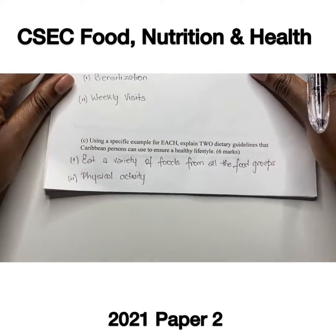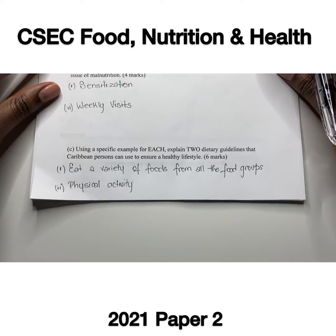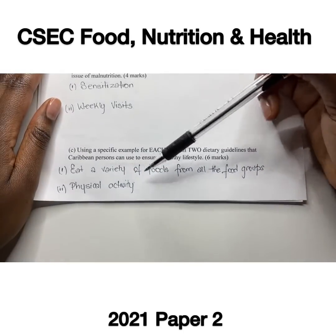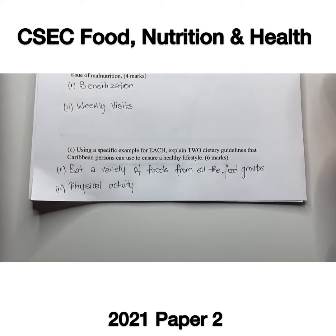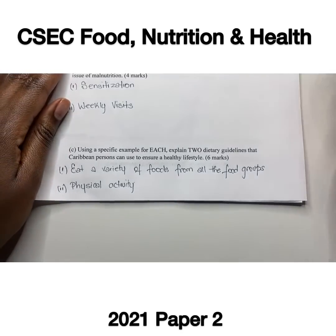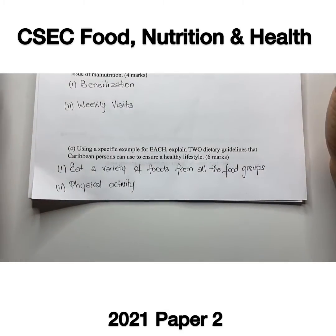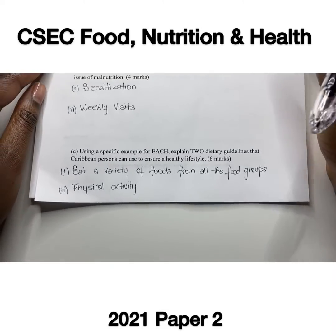Part C asks for two dietary guidelines Caribbean persons can use to ensure a healthy lifestyle, with a specific example for each. Caribbean people can eat a variety of foods from all the different food groups — staples, food from animals, legumes, vegetables, and fruits. They can also make physical activity a part of their daily routine; for example, 30 minutes of exercise per day.